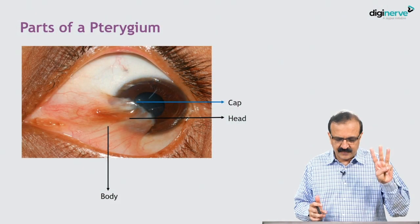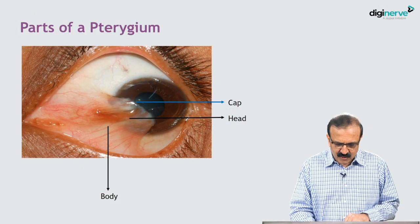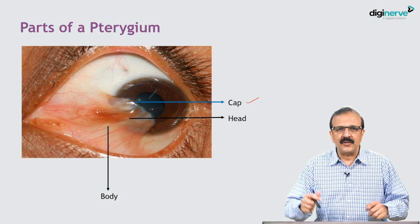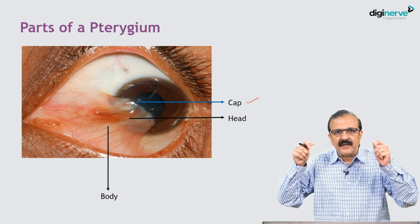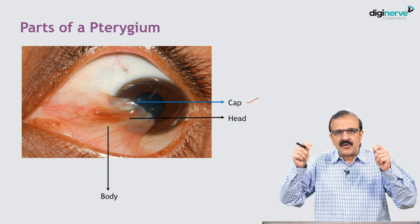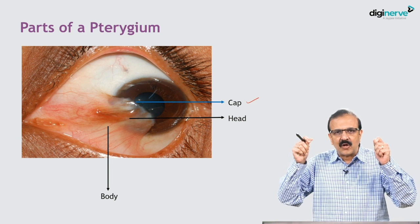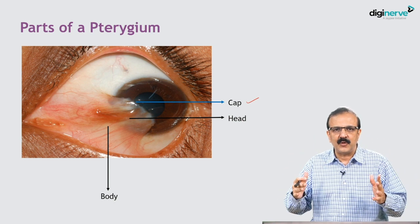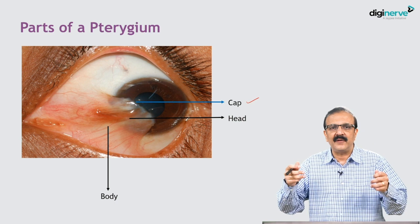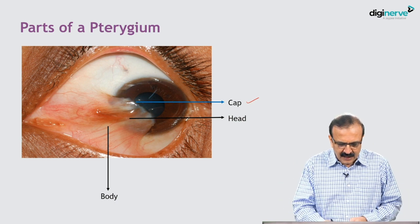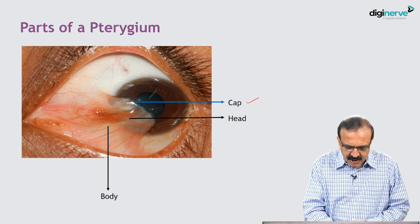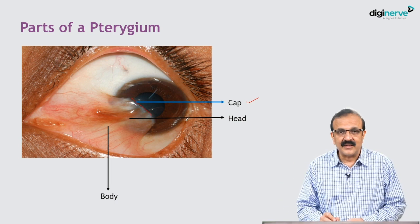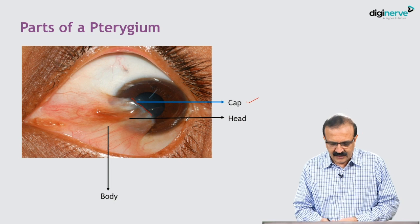There are three parts. The first one is the cap. Just like the head is the most top part of a human body when somebody wears a cap, the edge of the pterygium is the cap.